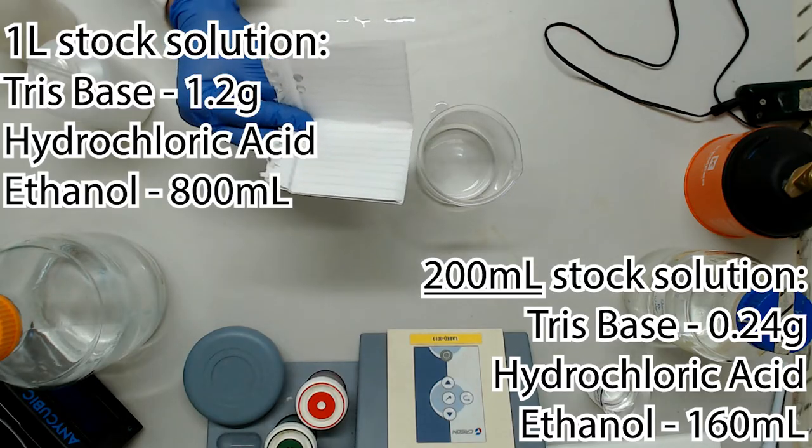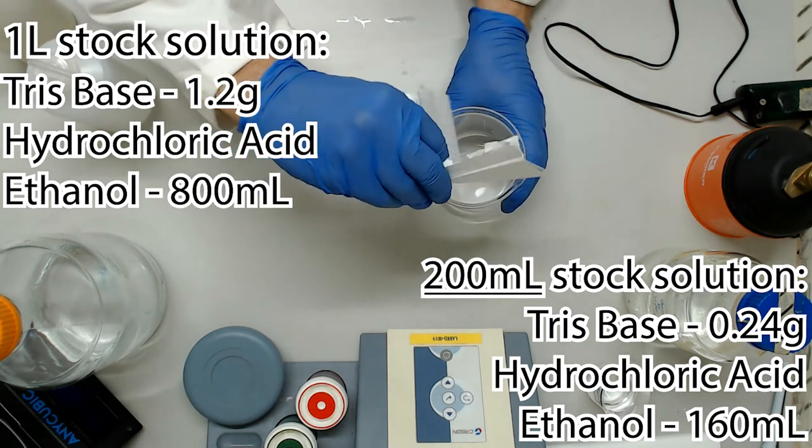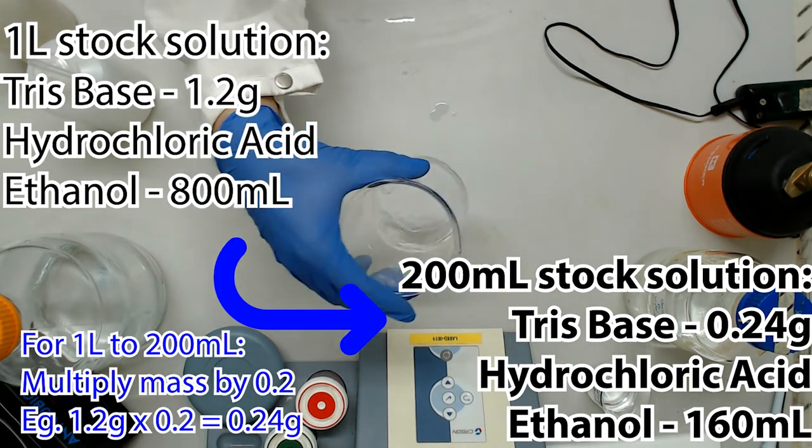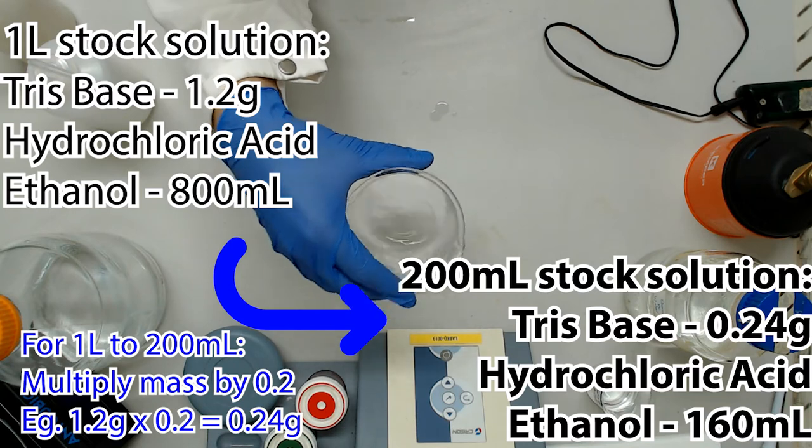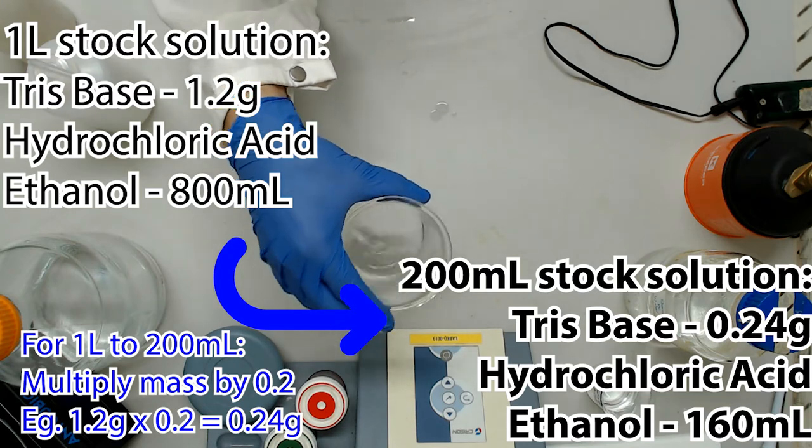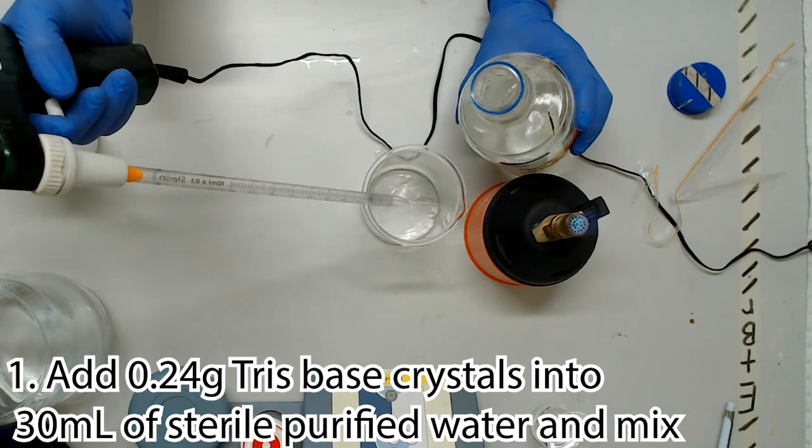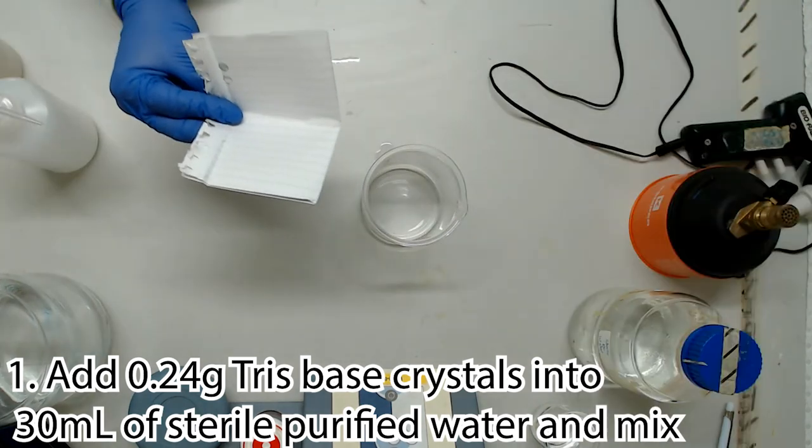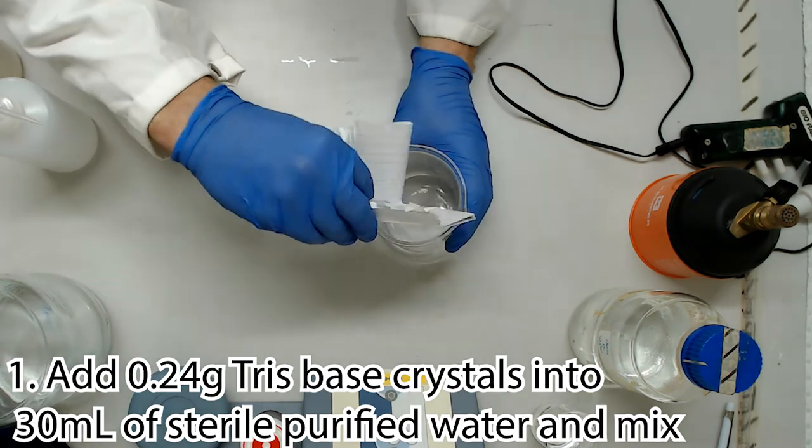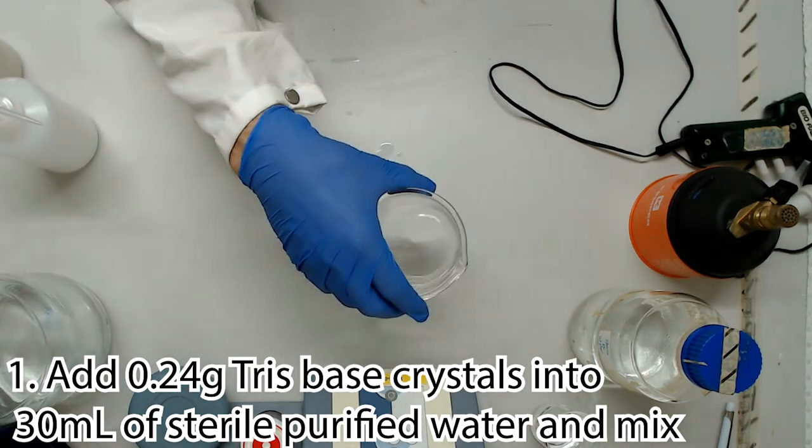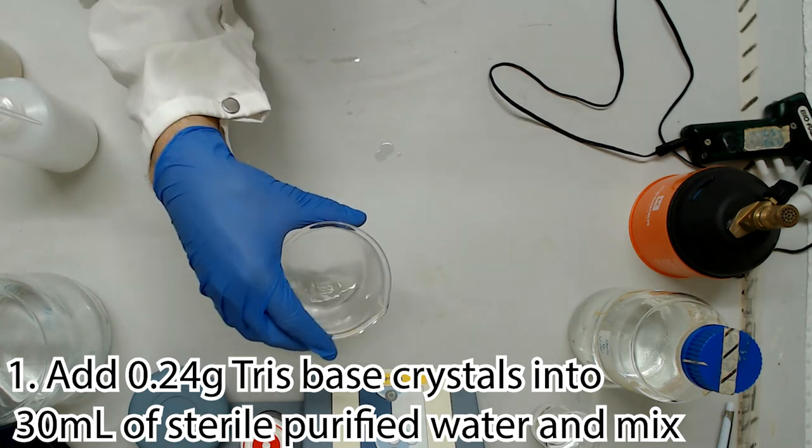We're going to make double the quantity of buffer PE than we do of any other buffer, since we use almost twice the volume than in the other steps. As such, the demonstrator will be making 200ml of buffer PE and will include the conversion from 1L of stock on screen. Starting with 30ml of autoclaved pure water, we're going to add 0.24g of Trisbase crystals, mixing slowly to allow them to dissolve. Heating is optional to speed up this process, but not necessary for such a low concentration of salt.